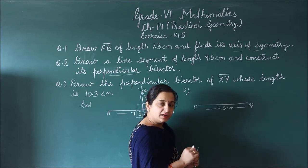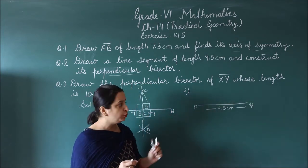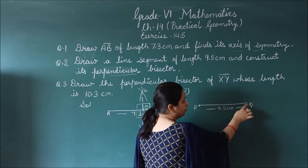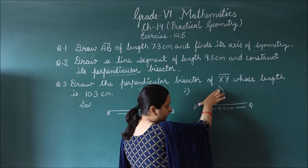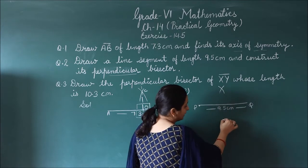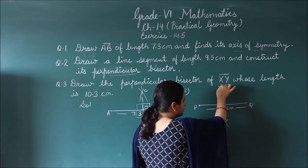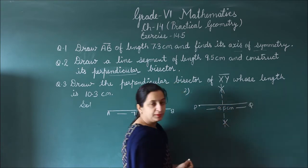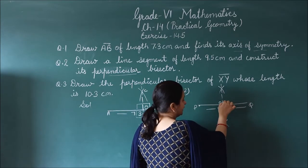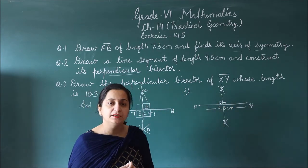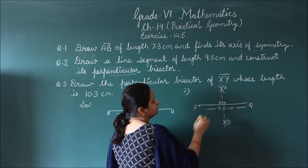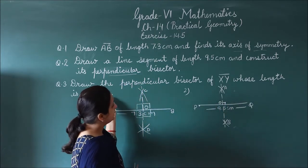From points P and Q, using the same radius, draw one arc above and one arc below from each point. Join the intersection points to get a straight line. If you check the angle here, you will get 90 degrees. This confirms the perpendicular bisector. Question number 1 and question number 2 have the same process.